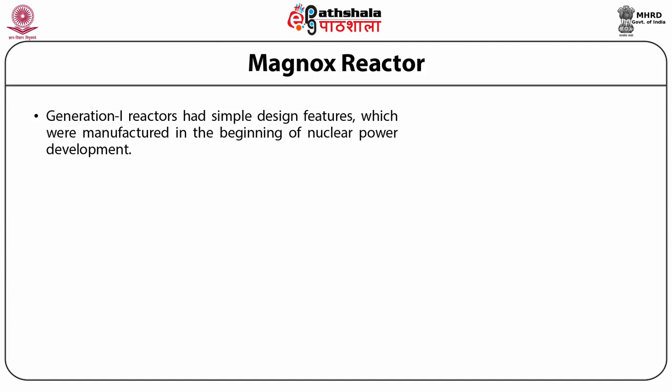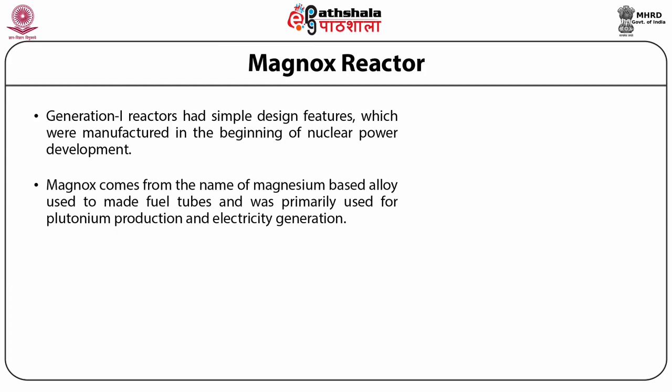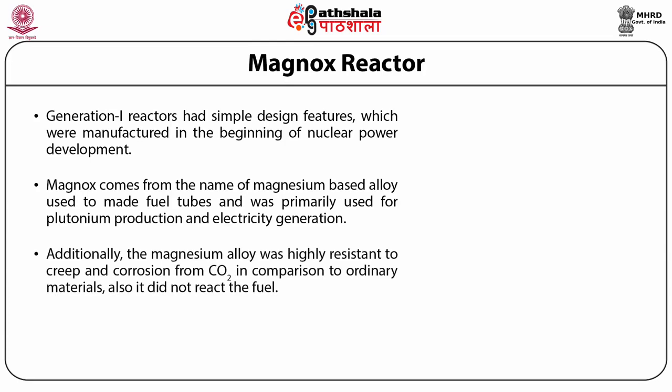We will now discuss the Magnox reactor. Magnox comes from the name of the magnesium-based alloy used to make fuel tubes and was primarily used for plutonium production and electricity generation. The magnesium-based alloy was selected due to its low neutron capture cross section. Generally in that reactor, graphite was used as a moderator, natural uranium as fuel, and CO2 as coolant. The schematic of the Magnox reactor is shown in the figure below. Additionally, the magnesium alloy was highly resistant to creep and corrosion from CO2 in comparison to ordinary materials.